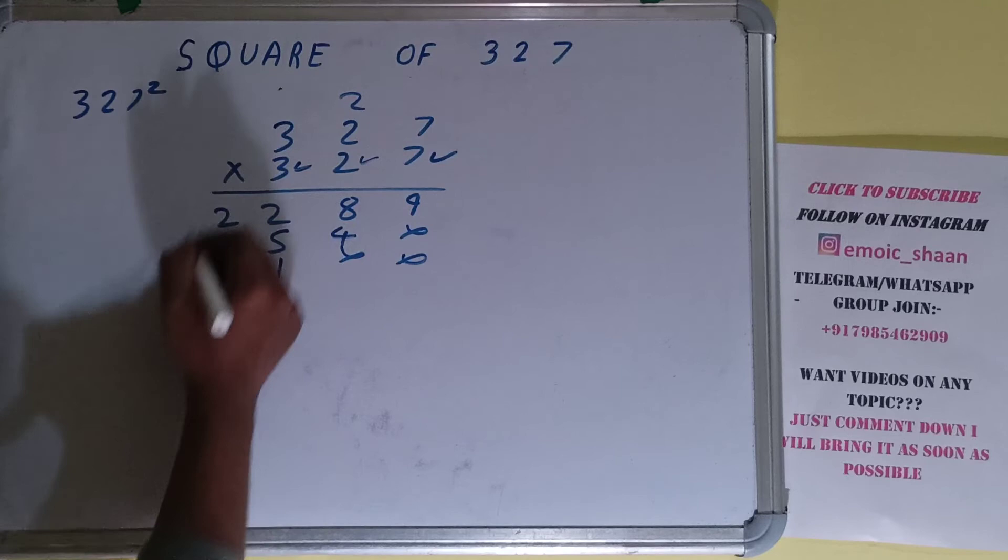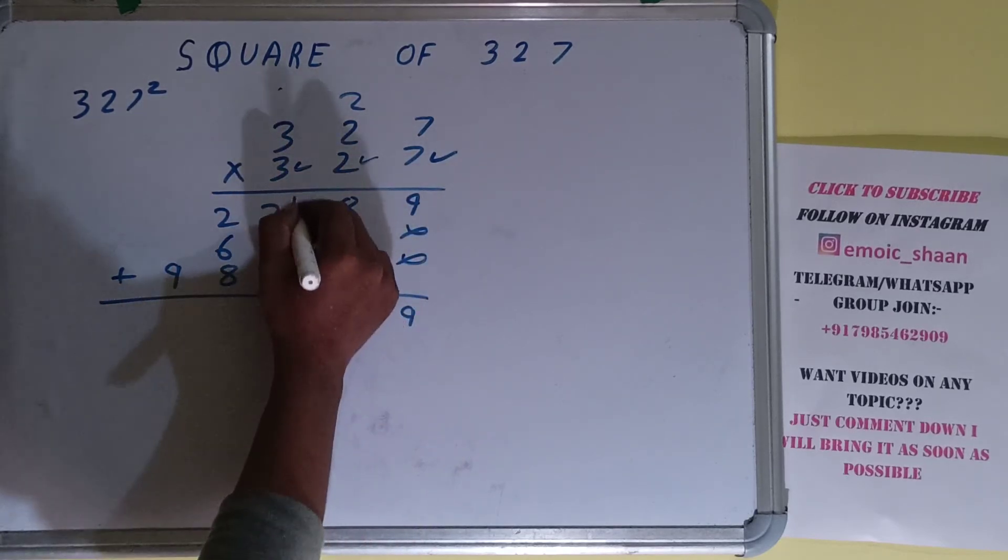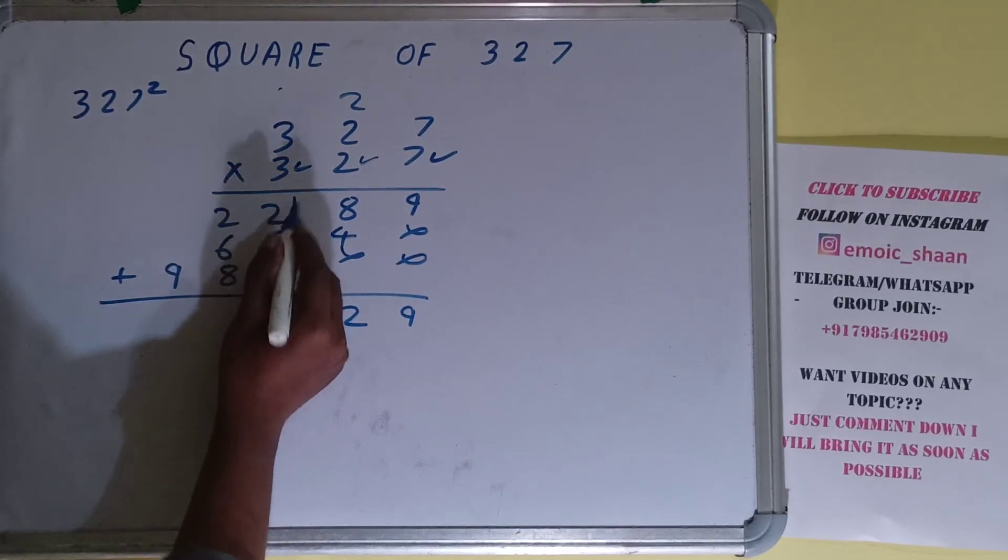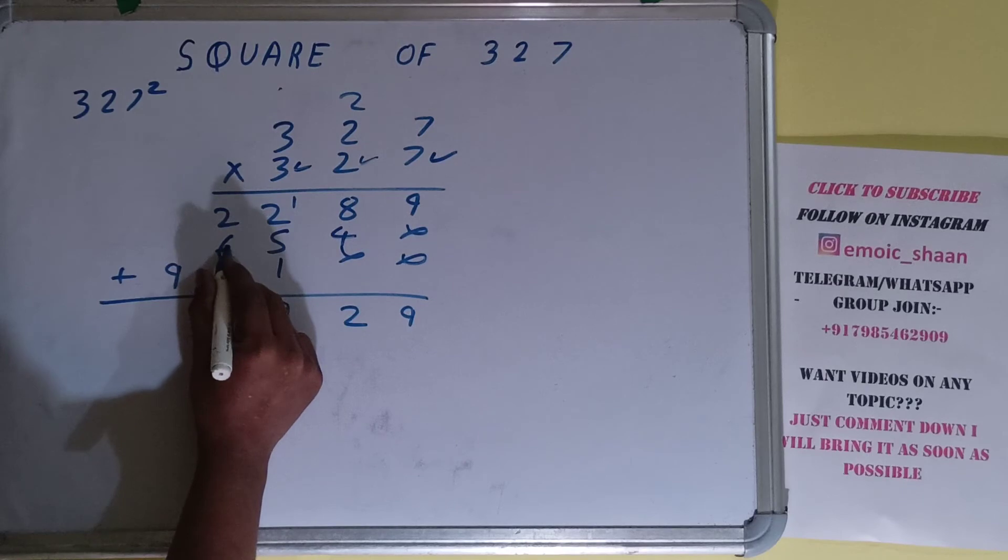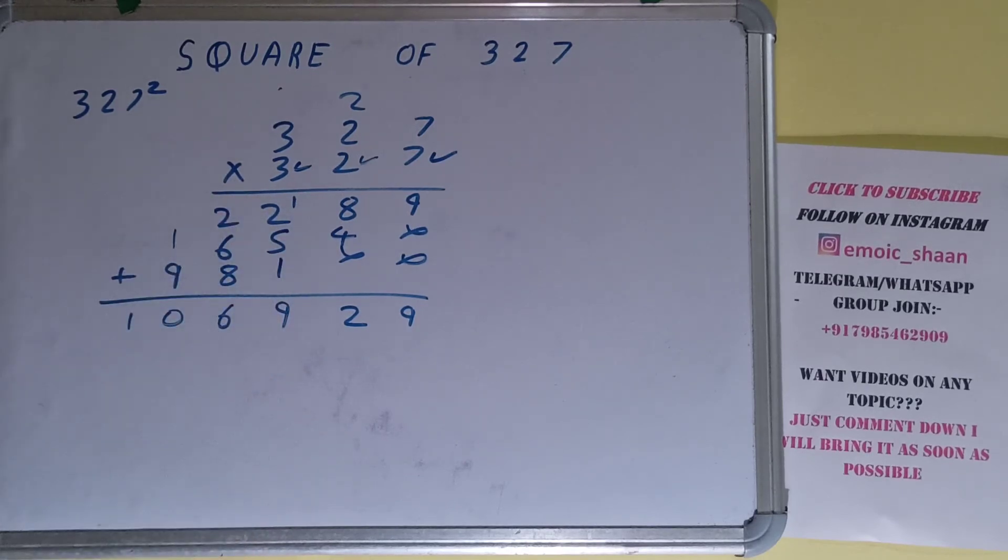3 times 3 is 9. Just add everything. 9, 8 plus 4 is 12. 1 carry. 5 plus 1 is 6, 7, 8. 9, 8 plus 6 is 14, 15, 16. 1 carry, 1, 0. Okay, so the answer will be 106929.